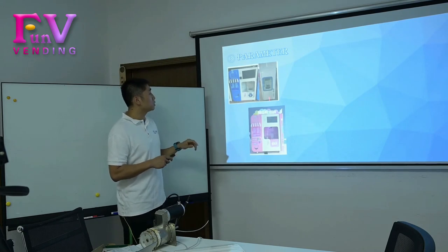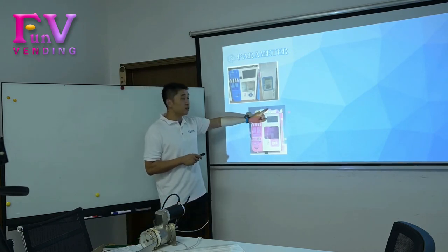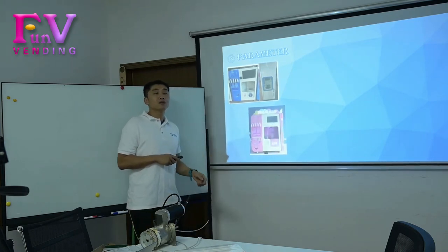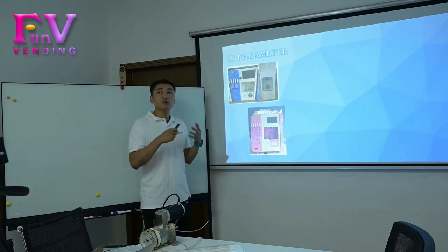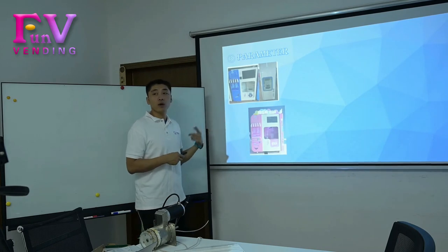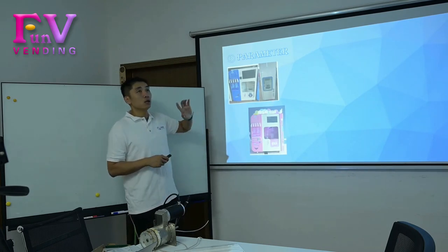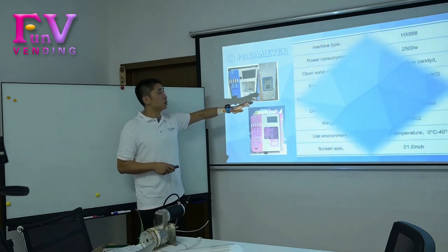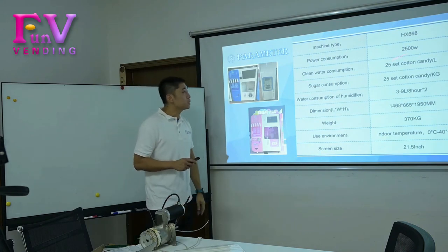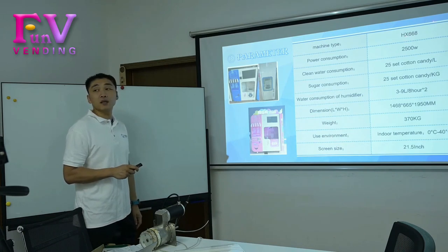The difference between these two options is that one has the 3D display and one does not. So it depends on how you set up your market and where you are going to place the machine in the shopping mall. Now let's look at the specifications of this machine. The model is HH668.